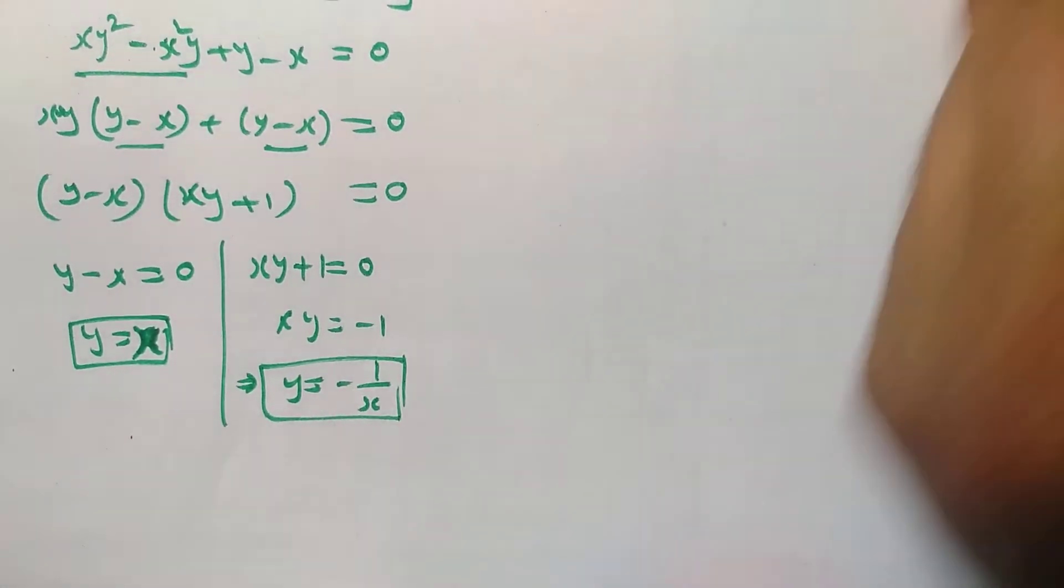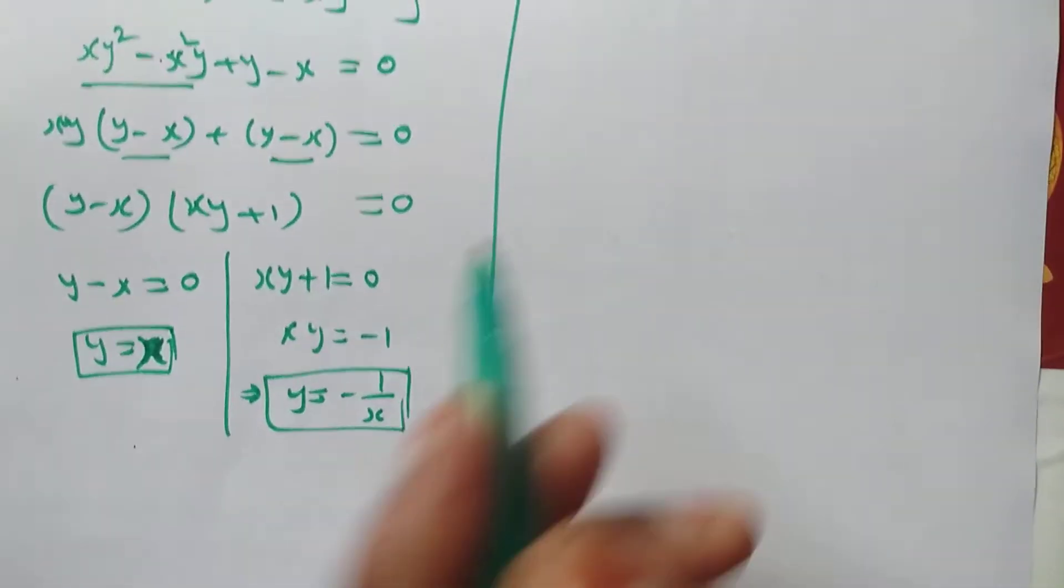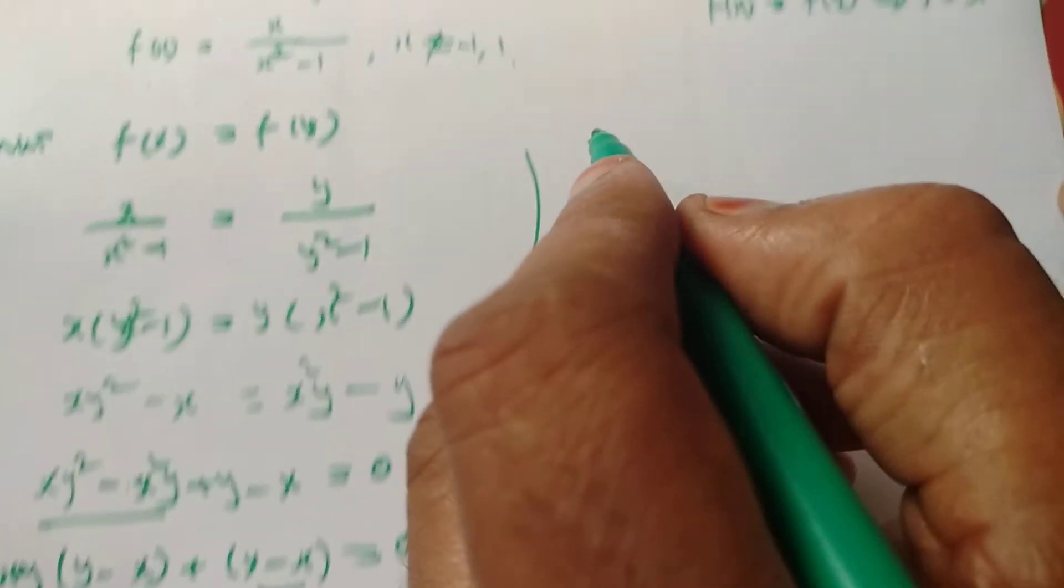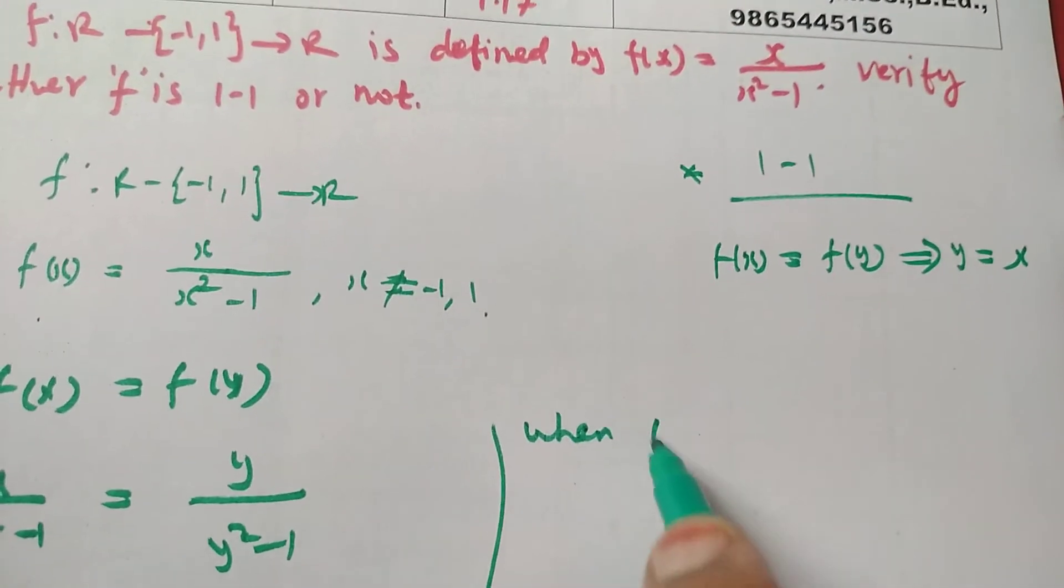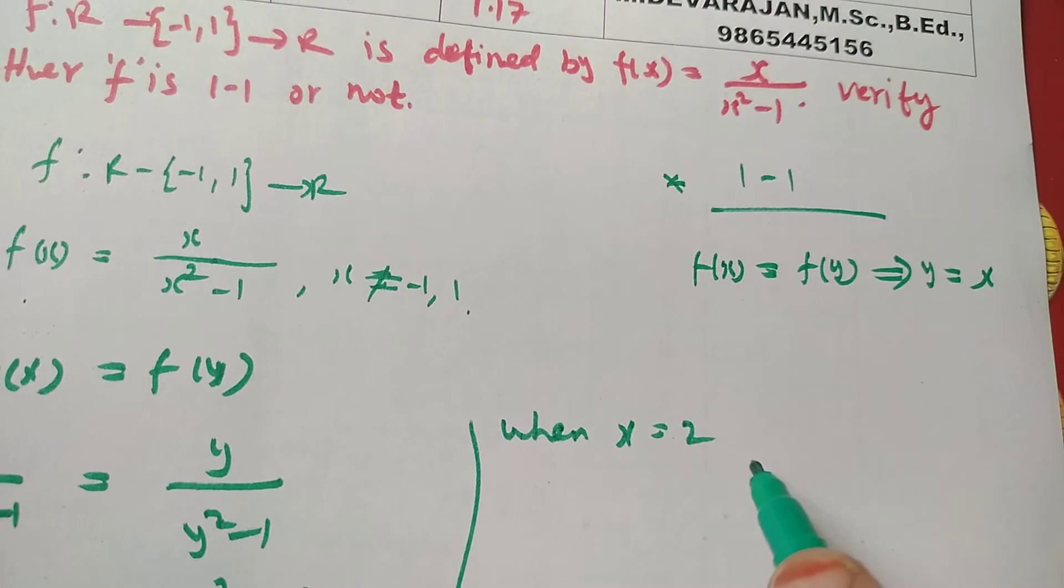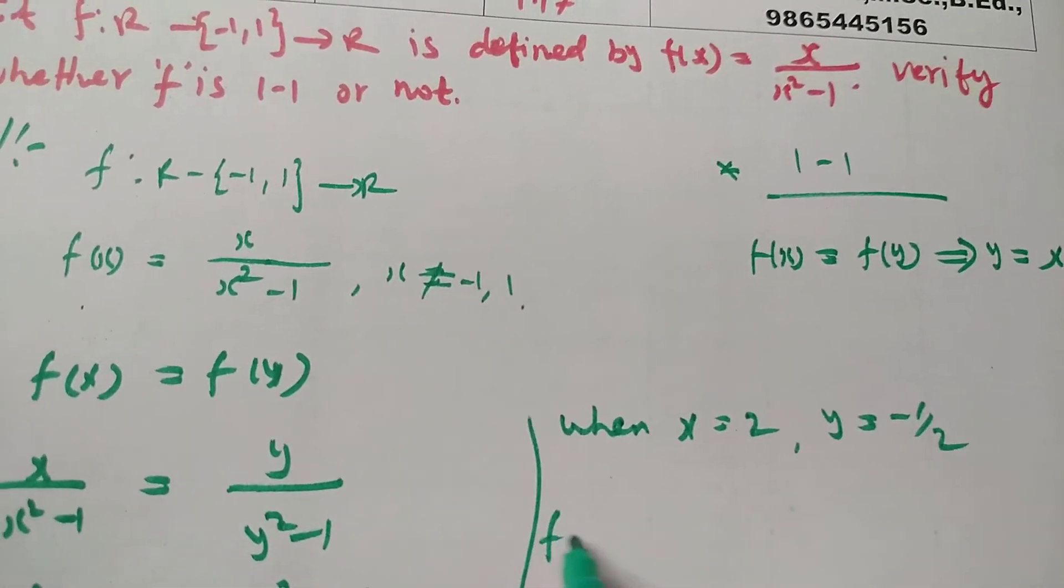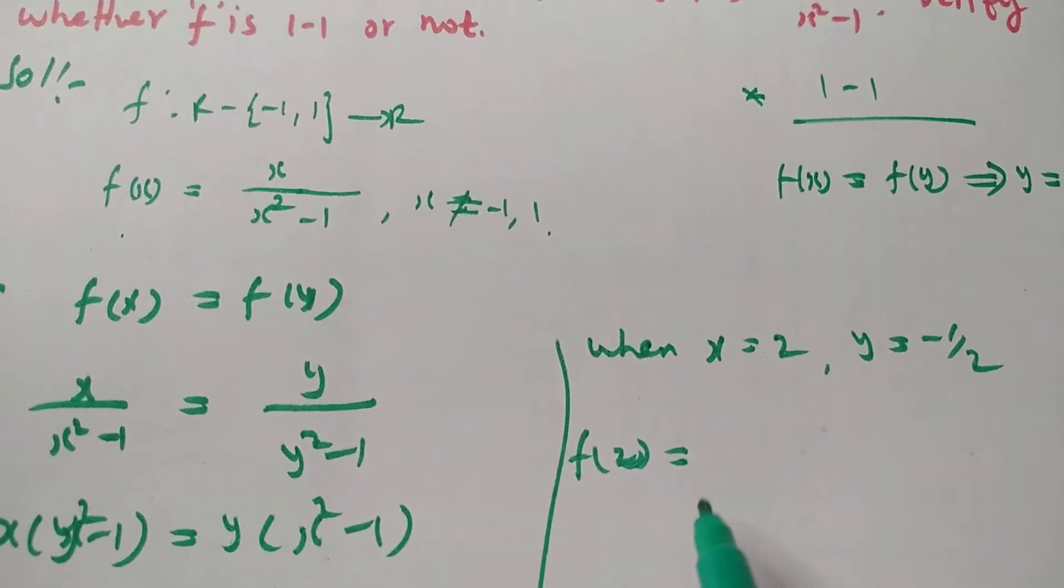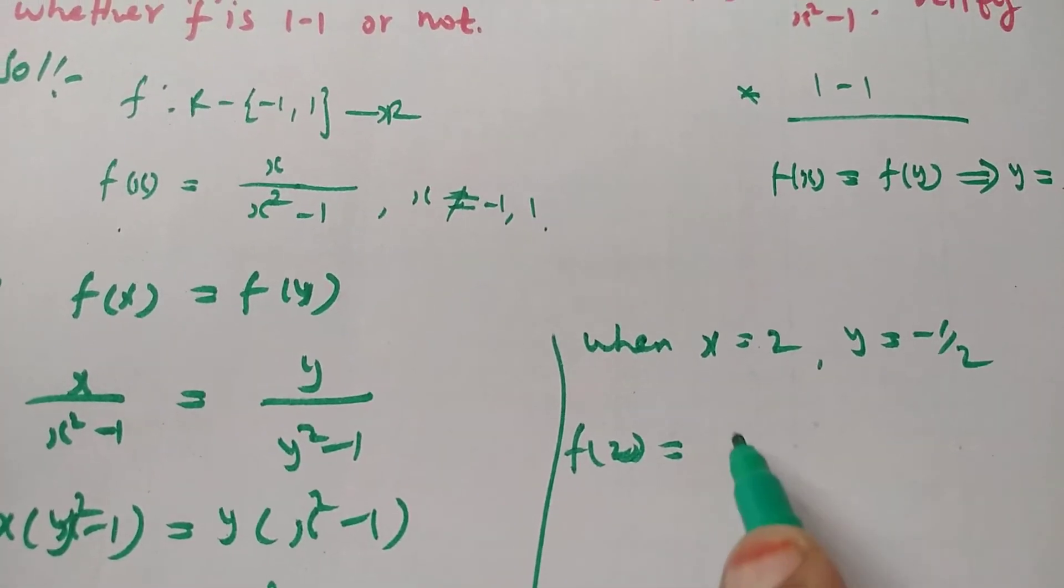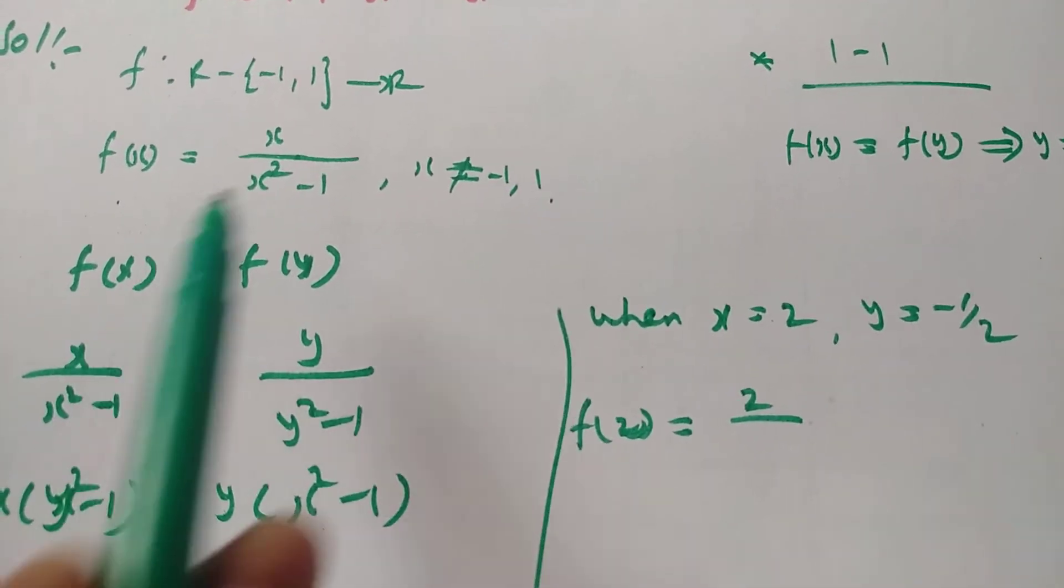Now check the condition. When x = 2, f(2) = 2/(2² - 1) = 2/3.